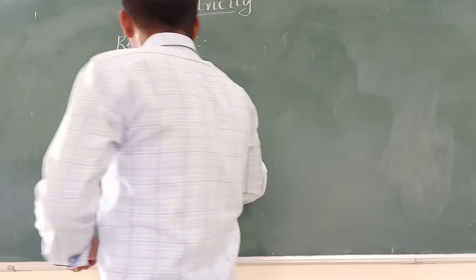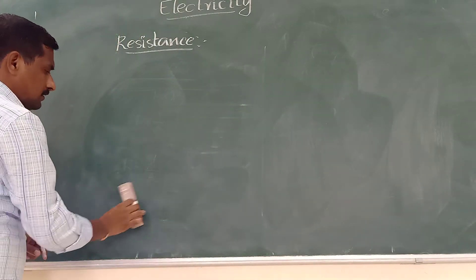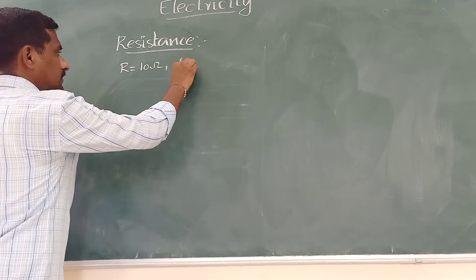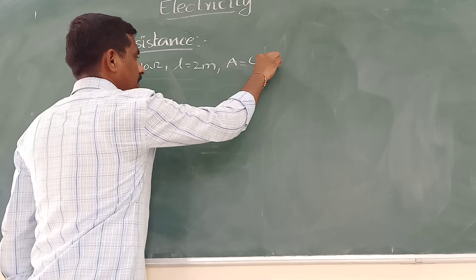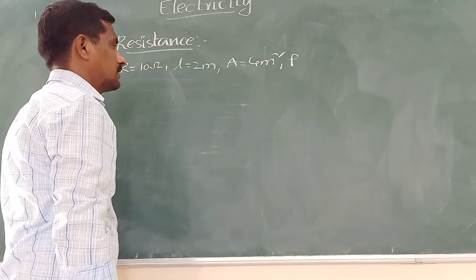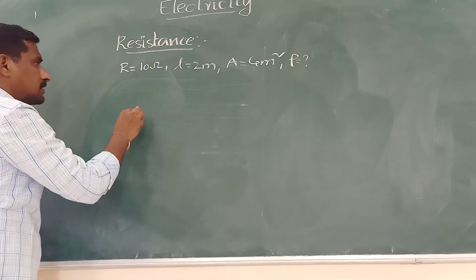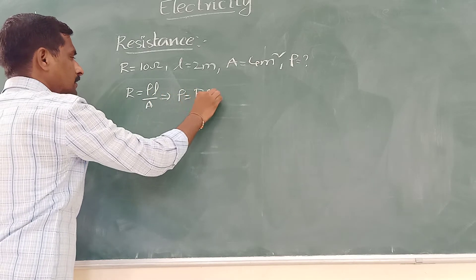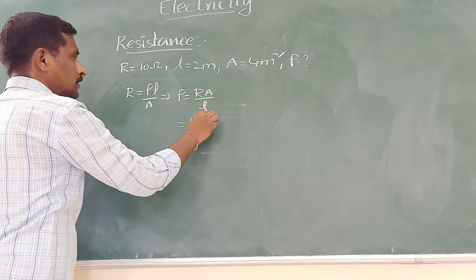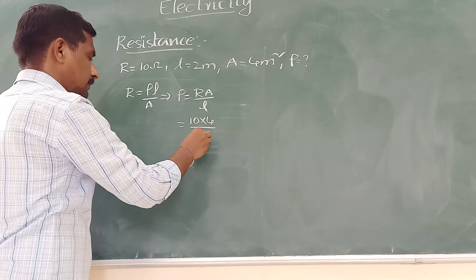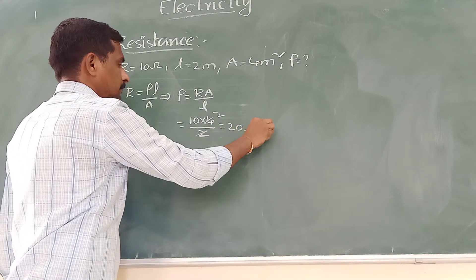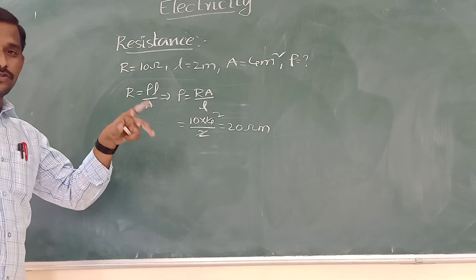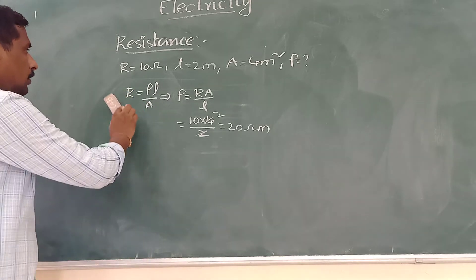We can solve problems using these formulas. For example, if resistance is 10 ohm, length is 2 meters, and area is 4 meter square, find the resistivity. From R equals ρL/A, we get ρ equals R times A by L. Substituting: ρ equals 10 times 4 by 2, which gives 20 ohm-meter. In practice, resistivity values are often very small, like 0.000-something.